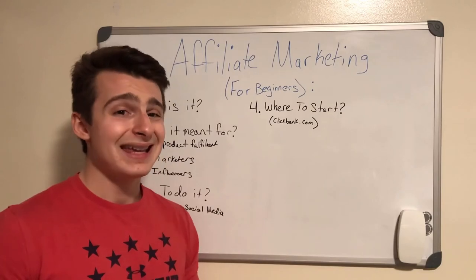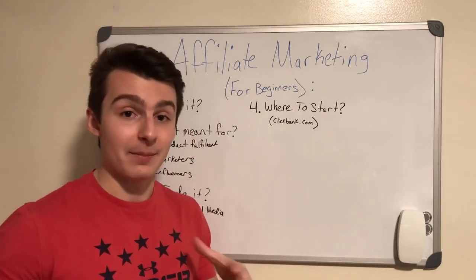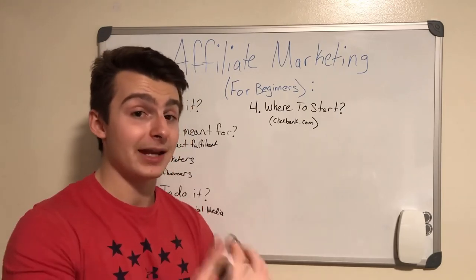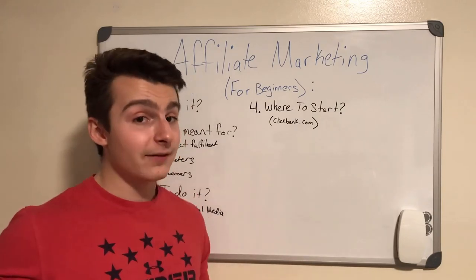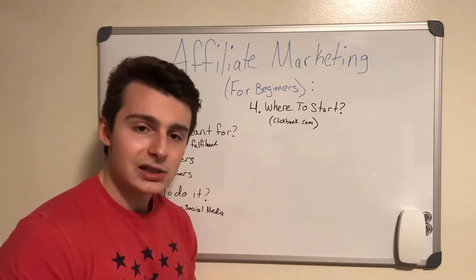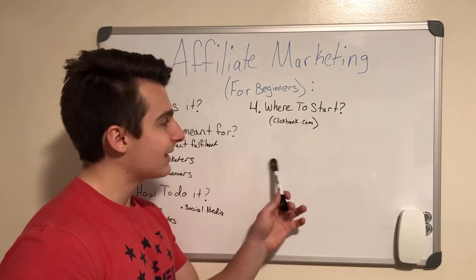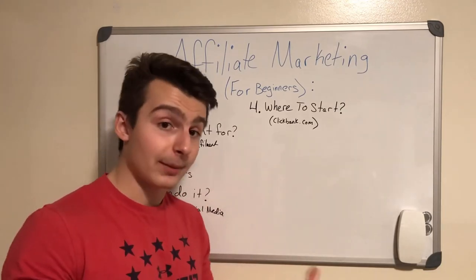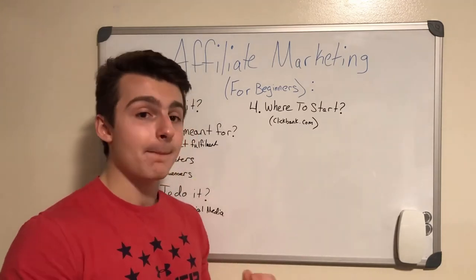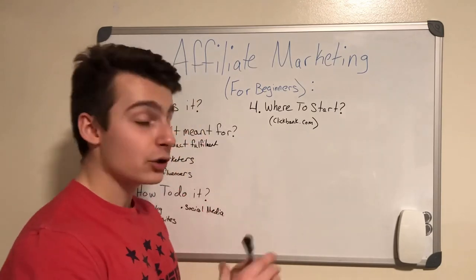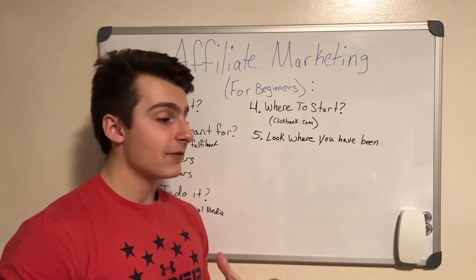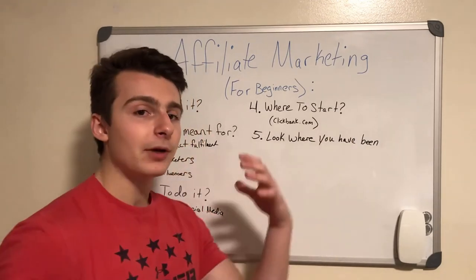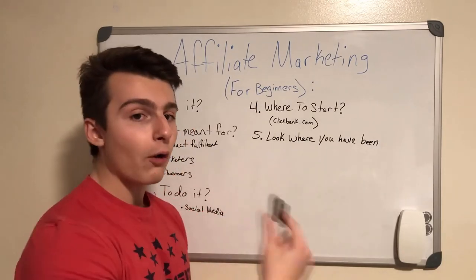Number five: go where you've already been. If you've bought a course, a product, or a book, there's a high chance that website has an affiliate program. Scroll to the bottom, check for the word 'affiliate,' and see if they have an affiliate section. You're already in a great position because you've bought the product — you can create a review or recommend it to someone who you think would get great value out of it.